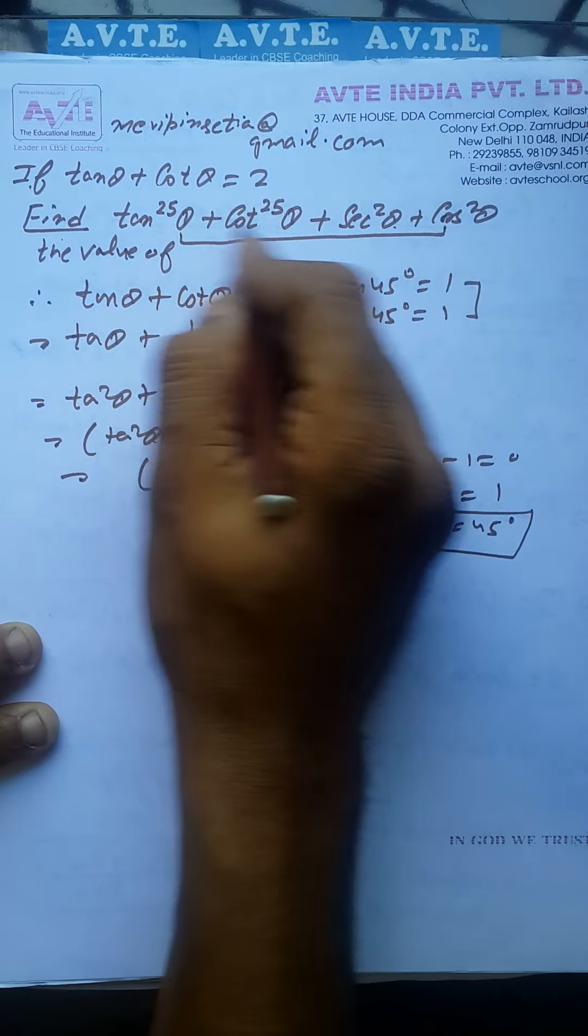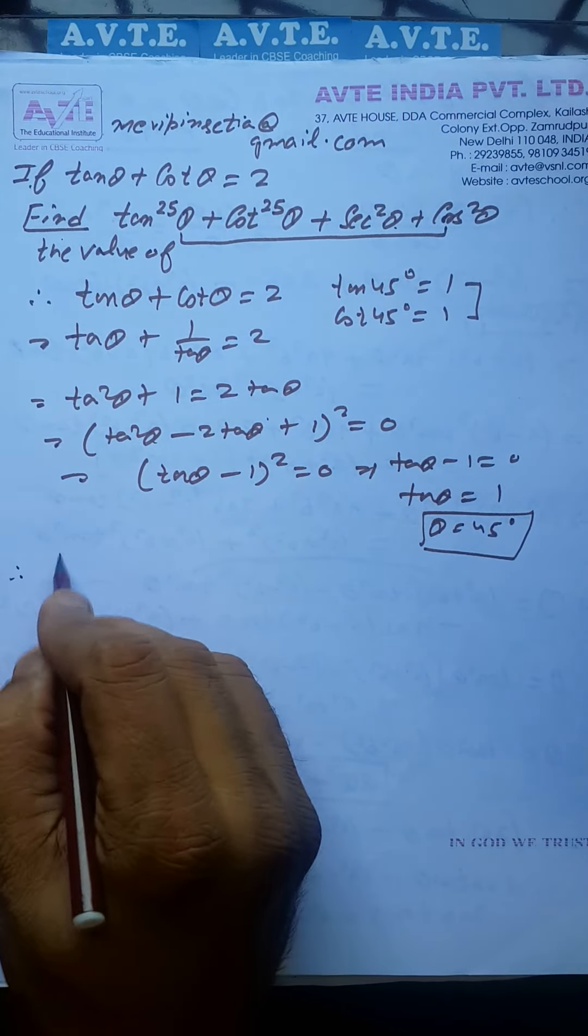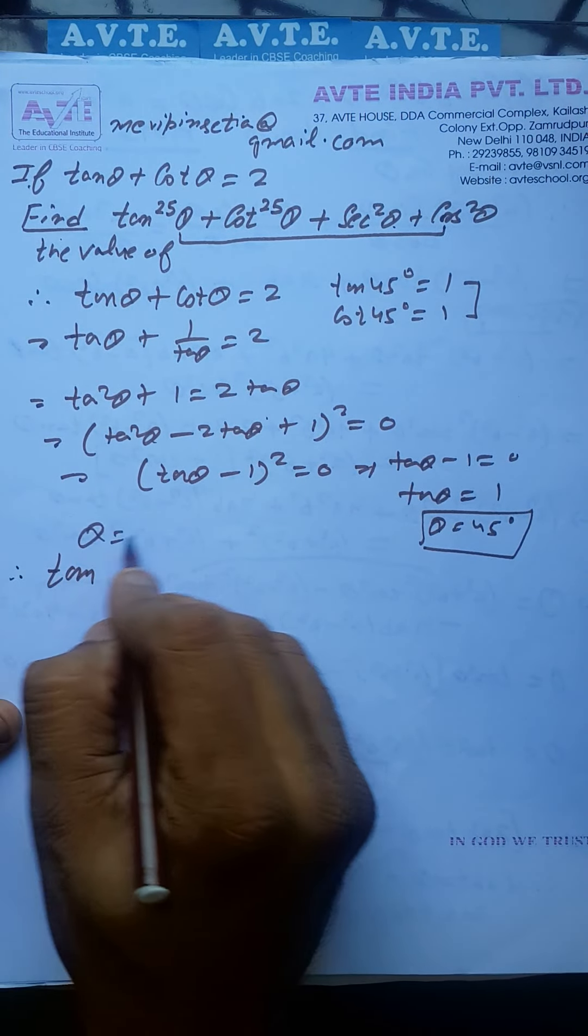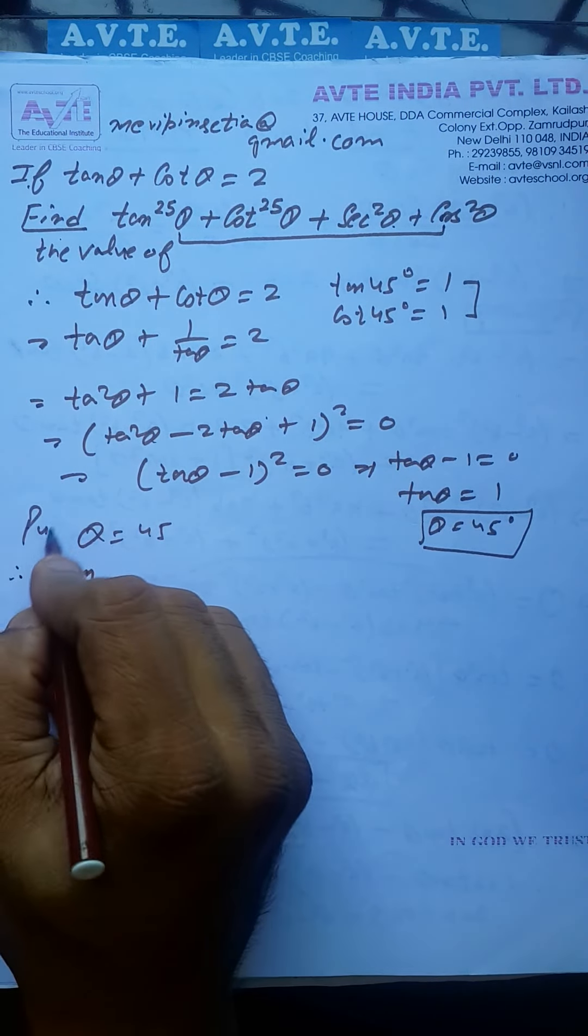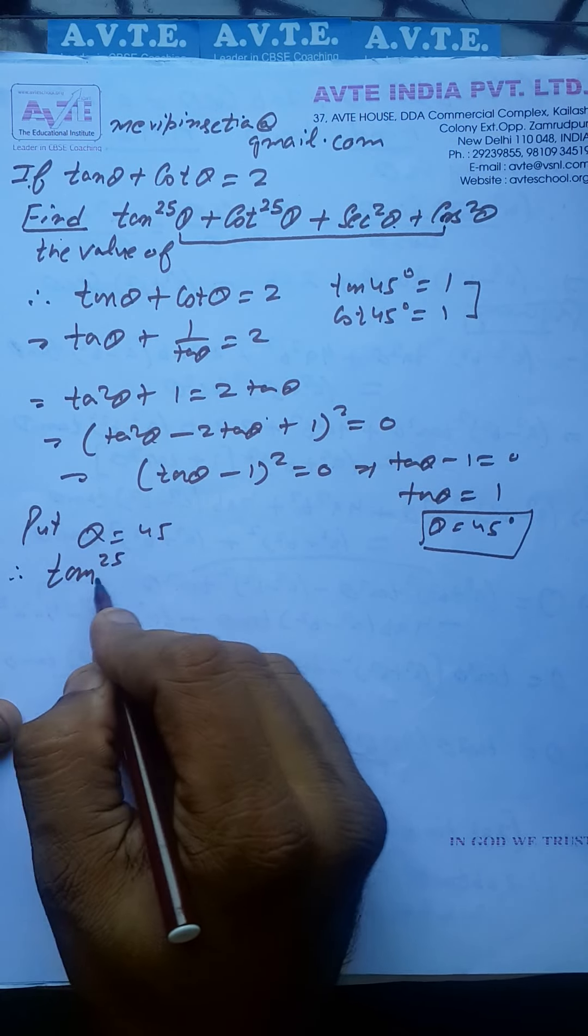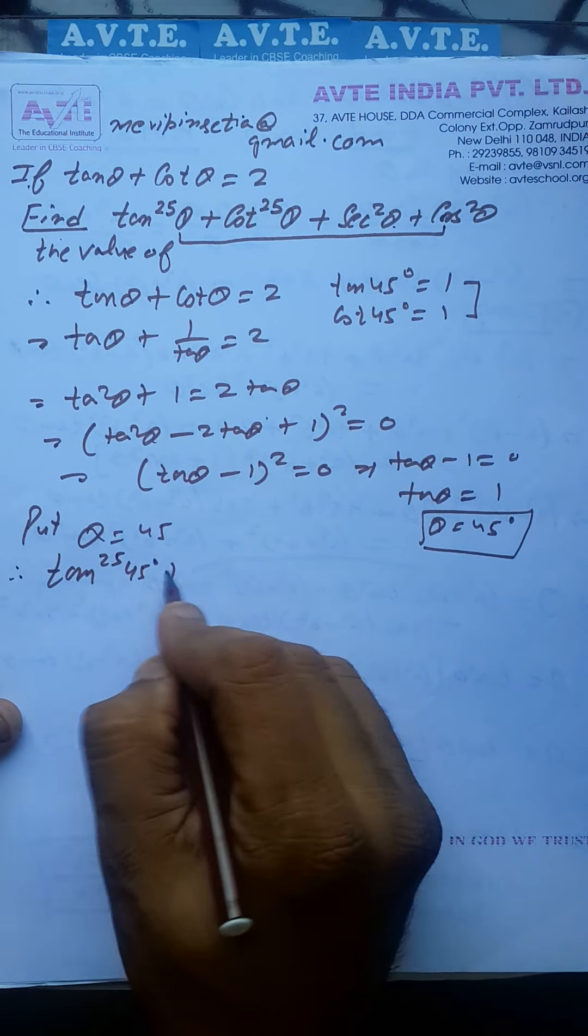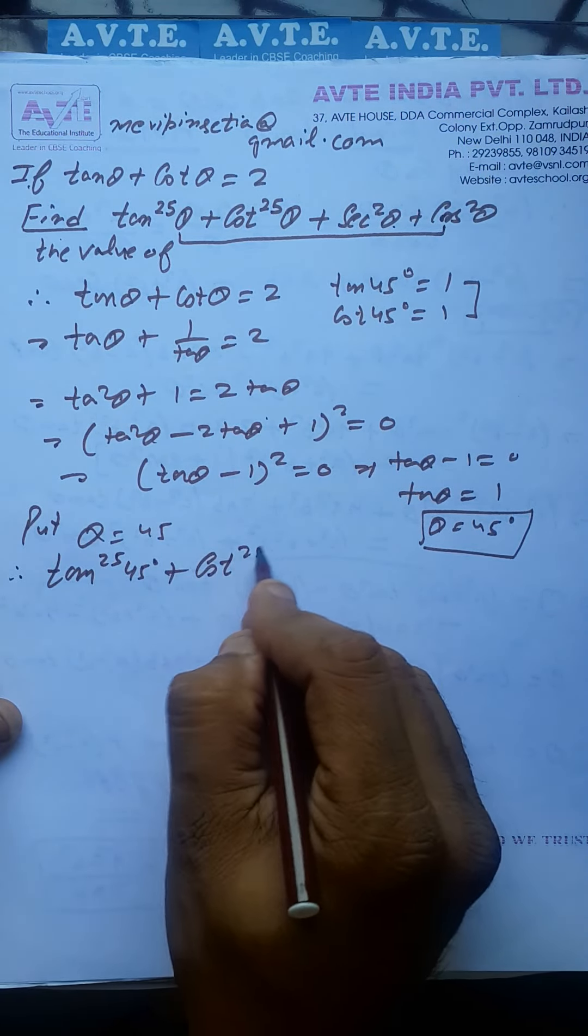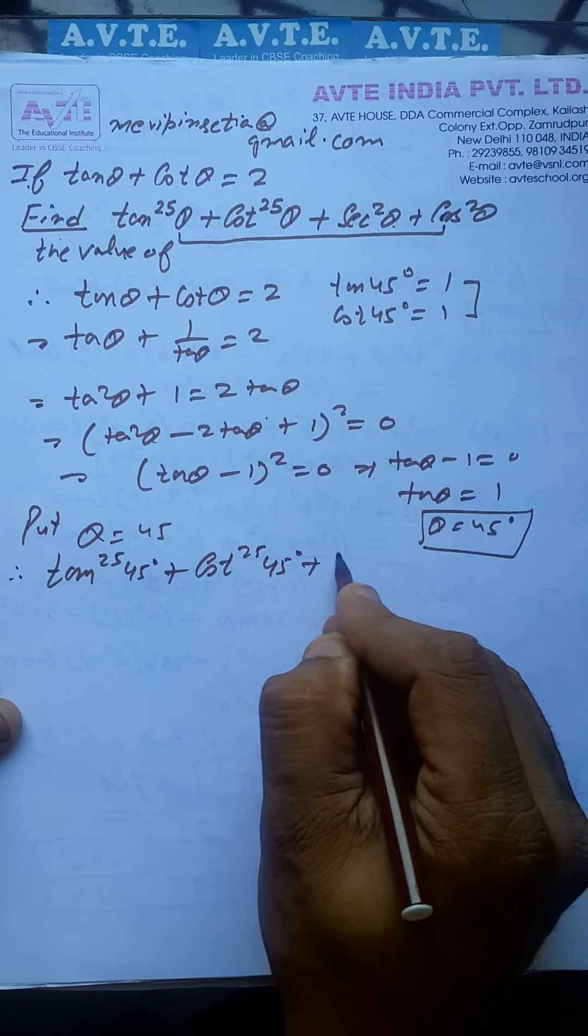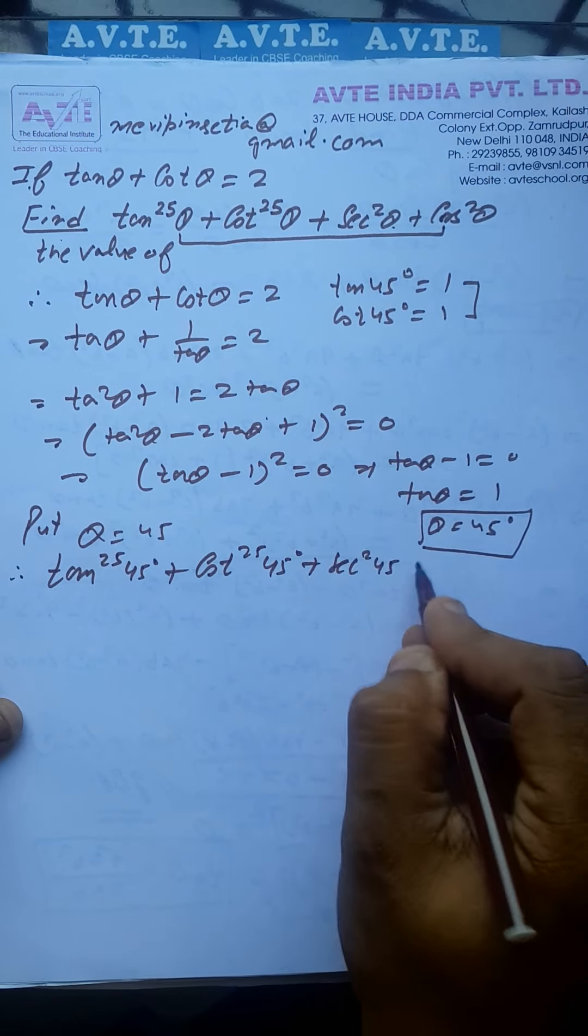Now you put 45 here, here, here, here. So this is tan raised to power 25 theta. Now theta is 45, so we have tan^25(45°) plus cot^25(45°) plus sec^2(45°) plus cos^2(45°).